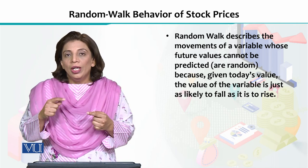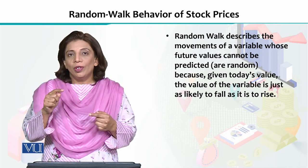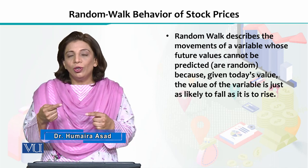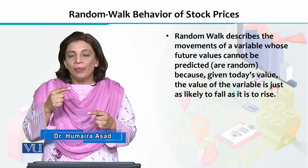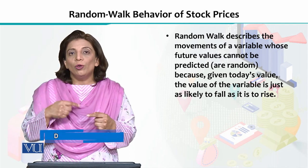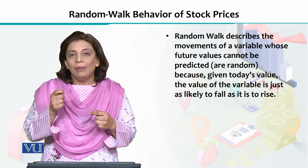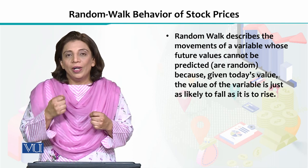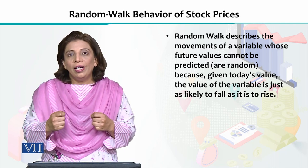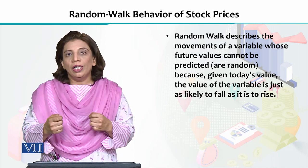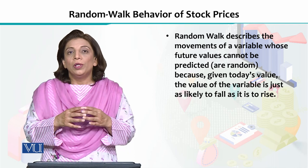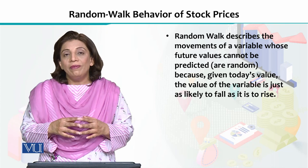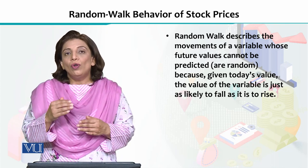Random walk means that for any stock, if you monitor or analyze it over time, tomorrow's stock price cannot be predicted, you cannot analyze that. For example, if a stock is Rs. 60 today, tomorrow it could be Rs. 60, Rs. 65, or Rs. 104 — you cannot predict this. If this is the case, then we say that stock prices are following the pattern of random walk.